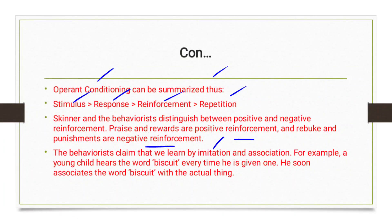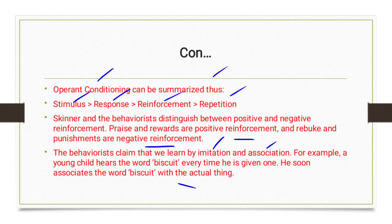For example, a young child hears the word 'biscuit' every time he is given one; he soon associates the word 'biscuit' with the actual thing — that comes under the process of repetition. Another important feature of behaviorism is that humans have no inborn capacity for language learning, and social conditions play an important role in language learning.